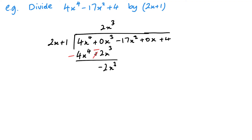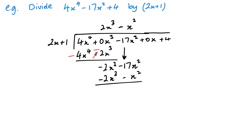I like to change the sign and add — I find it quicker and easier in an exam, avoiding errors with subtracting negatives. So now I have minus 2x cubed. Minus 2x cubed divided by 2x gives me minus x squared. Don't forget to bring the next term down. Then minus x squared times 2x is minus 2x cubed, and minus x squared times 1 is minus x squared. Change signs and add: minus 17 plus 1 gives minus 16x squared.